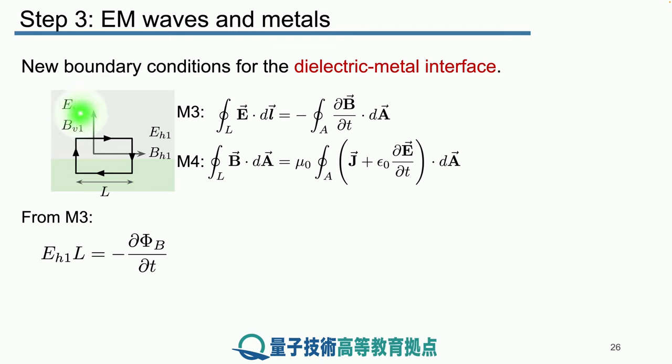E_H1 times L, where L is the length of this top path over here, is given by the negative of d phi B over dt, where phi B is the magnetic flux through the area. Again, notice that there is no contribution from E_H2, simply because there is no electric field inside the metal.